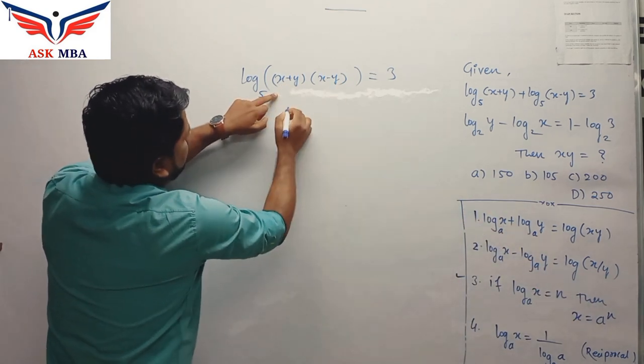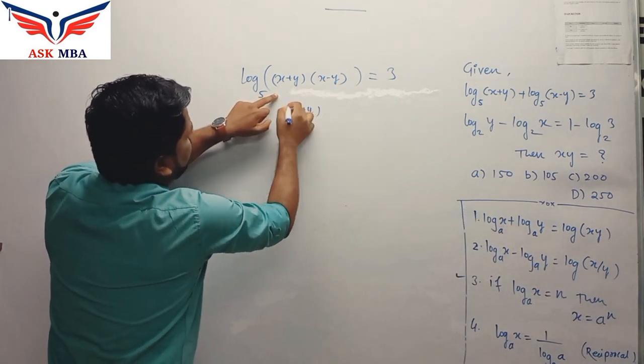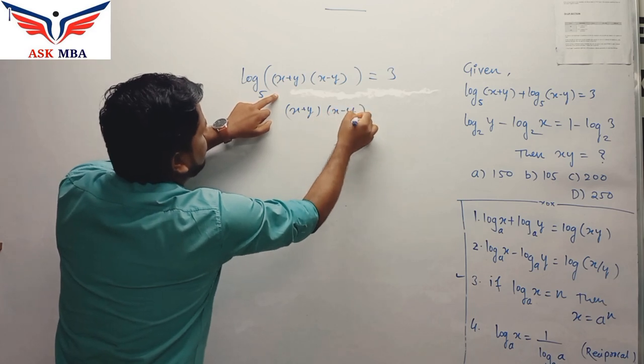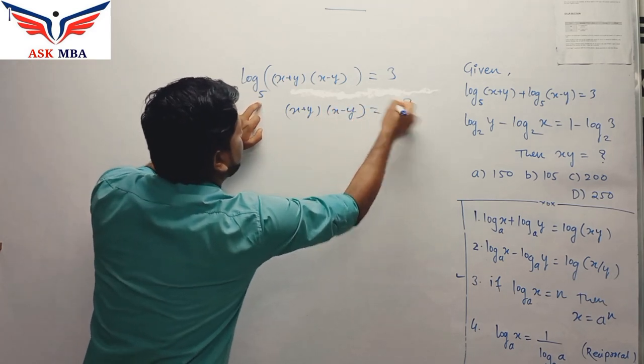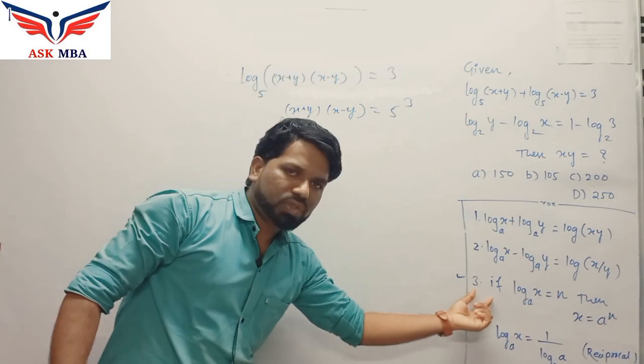So we have these terms (x+y) into (x-y) is equal to 5 power 3. This is how third property will be used.